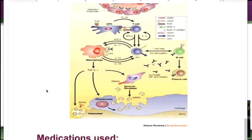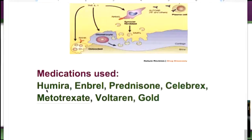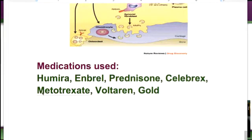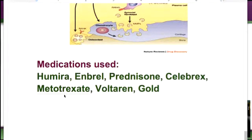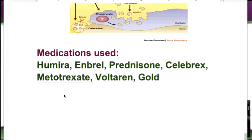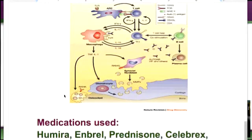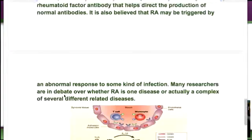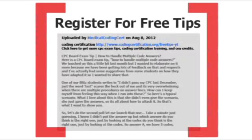Medications used for RA include Humira, Enbrel, Prednisone, Celebrex, Methotrexate, Voltaren, and Gold. So that's your little tidbit about rheumatoid arthritis.